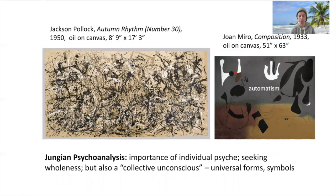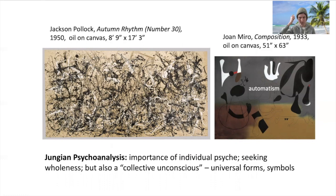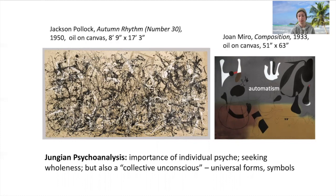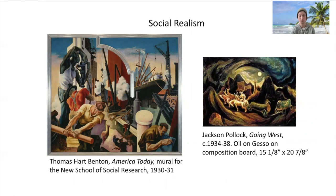Beyond the surrealist obsession rooted in Freudian psychoanalysis, Pollock was also interested in Jungian psychoanalysis. Carl Jung talked about tapping into a shared collective unconscious — not just your own individual subconscious, but a shared collective one. Pollock actually underwent Jungian psychoanalysis to treat his alcoholism, and this emphasis on the importance of the individual psyche and the personal quest for wholeness really appealed to him. The idea of the collective unconscious refers to universal forms and symbols — we talked about the utopian aspirations of avant-garde movements interested in creating a universal art as well.